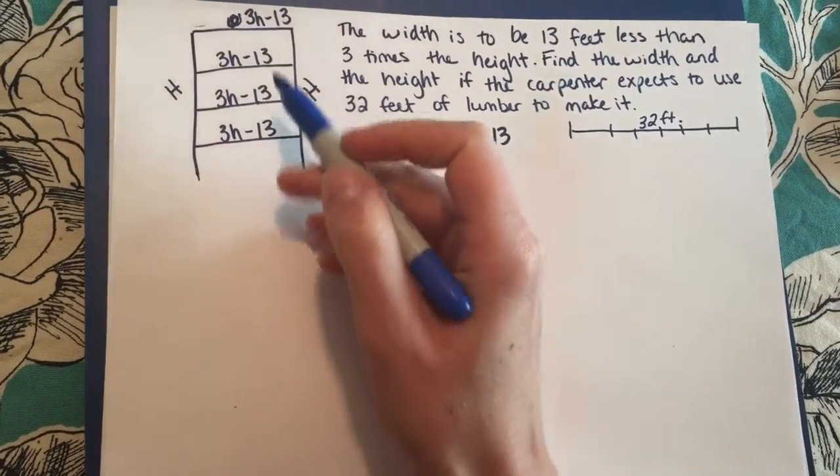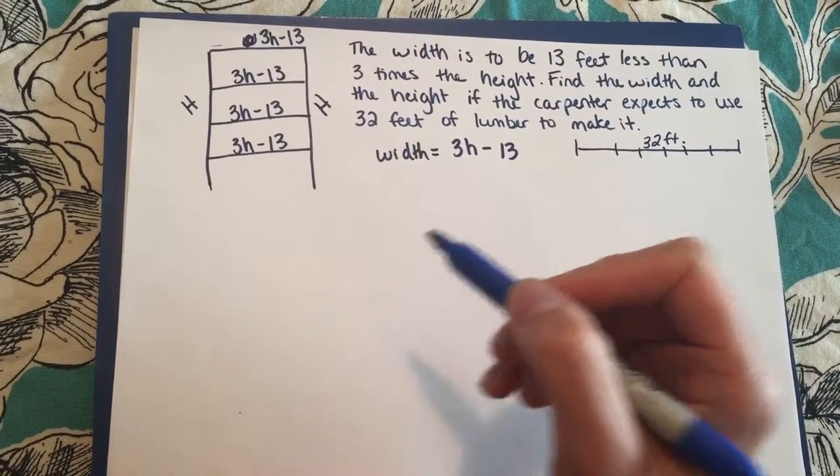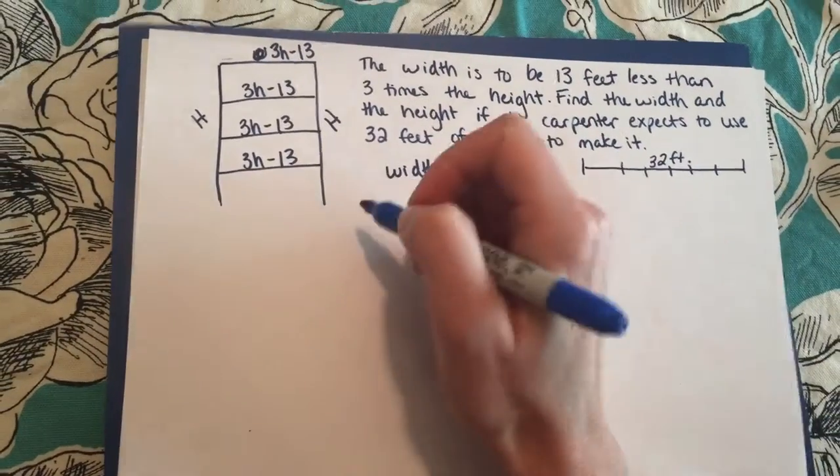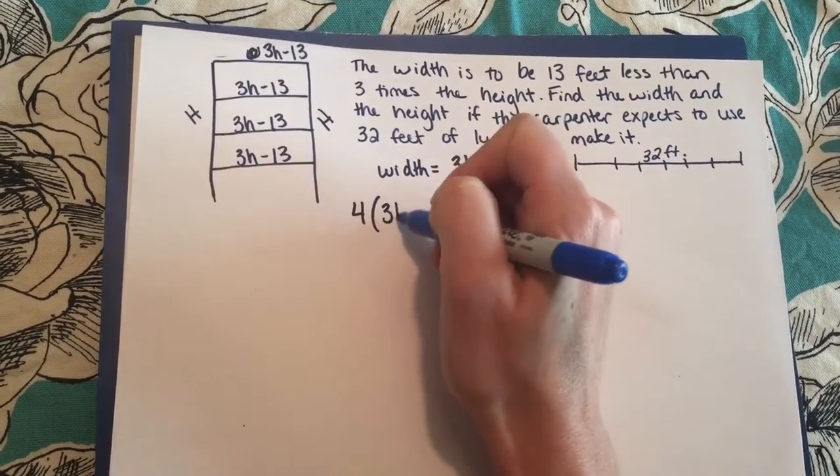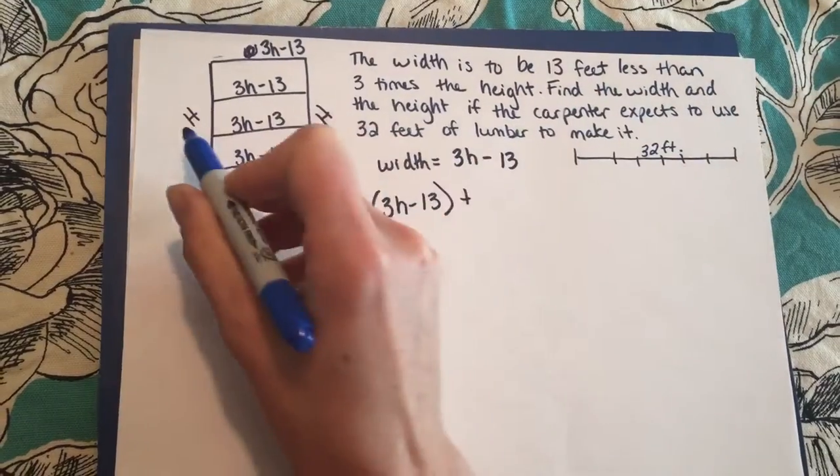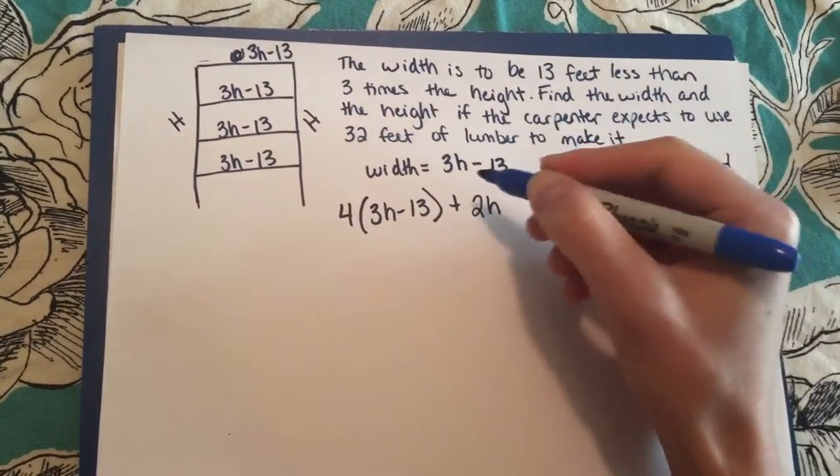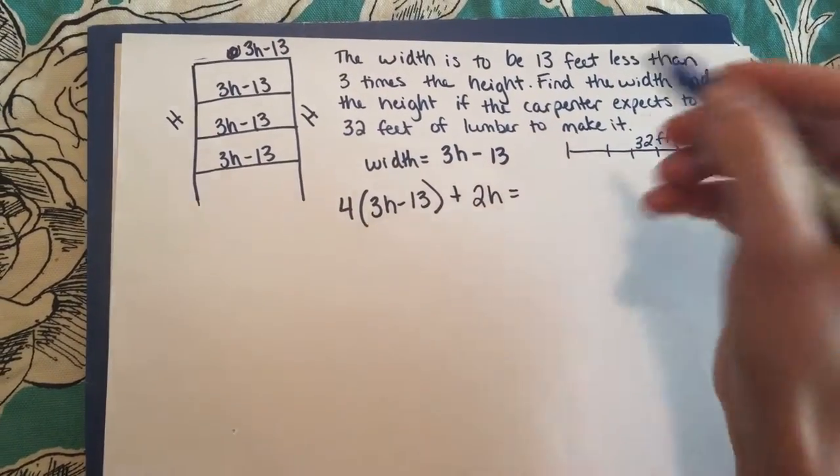So I know that I have 4 of these so I could add them all together, 3h minus 13 plus 3h minus 13, but honestly it's easier if I say I have 4 times 3h minus 13 and then plus I have 2h's here, so plus 2h and that's going to give me a total of 32 feet.